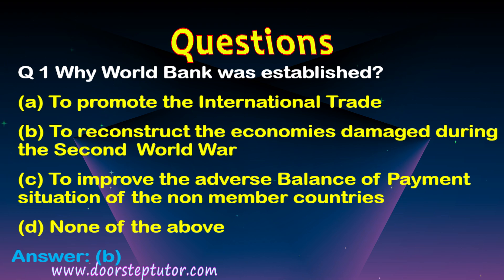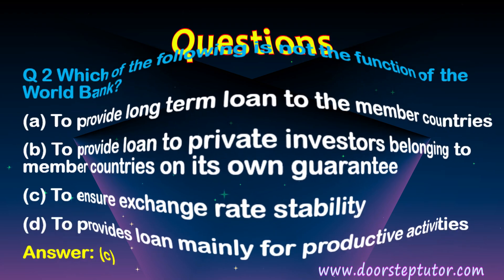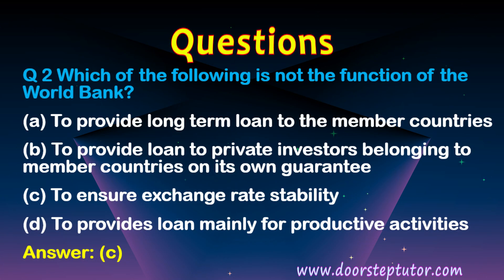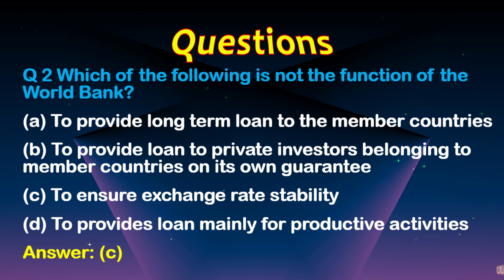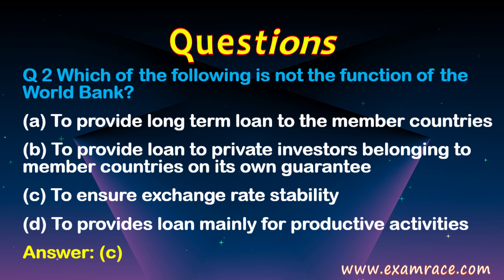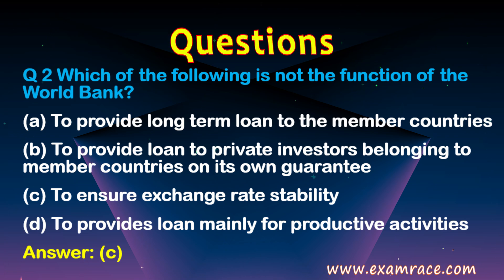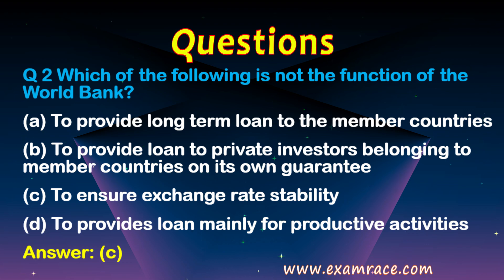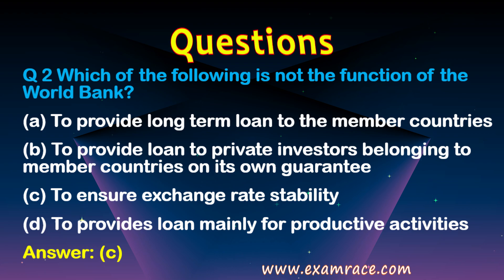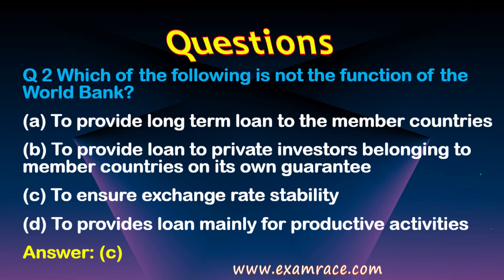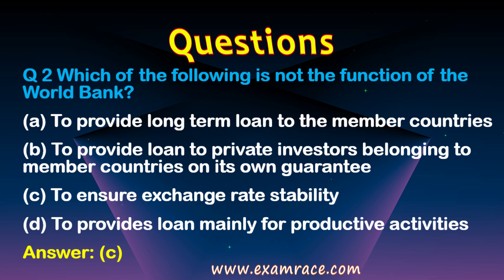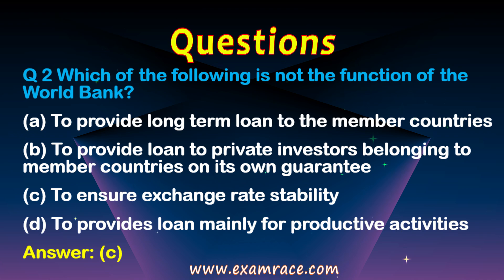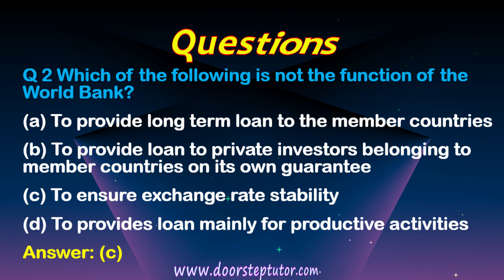To promote international trade, the World Trade Organization exists; and balance of payments is dealt with by the International Monetary Fund. Question two: Which of the following is not a function of the World Bank? Option C is correct — ensuring exchange rate stability — because that concerns the IMF. Options A, B, and D are functions of the World Bank: providing long-term loans, loans to private investors, and loans for productive activities and sustainable development.